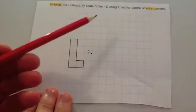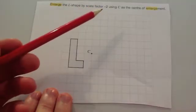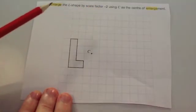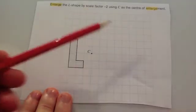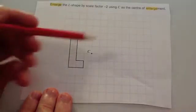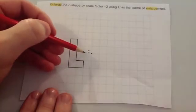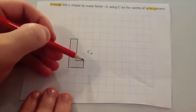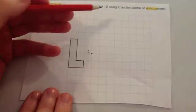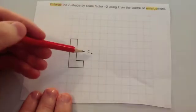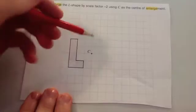When it's a negative scale factor — say a scale factor of negative 2 — it still gets twice as far away, but because it's negative, it's on the opposite side of the centre of enlargement. So this point here is 1 to the left and 1 down. With negative 2, you double it and go the opposite direction, so instead of going 1 to the left and 1 down, you go 2 to the right and 2 up.